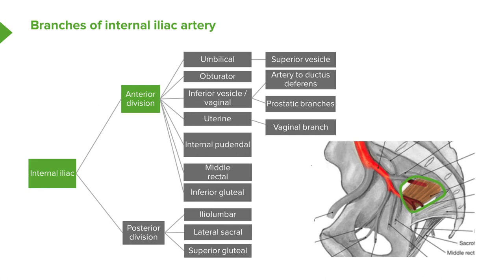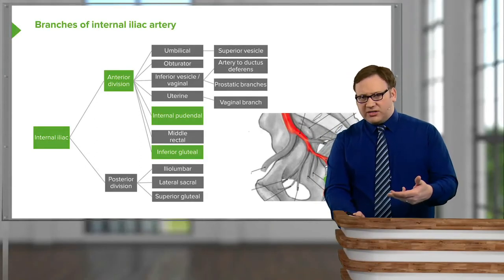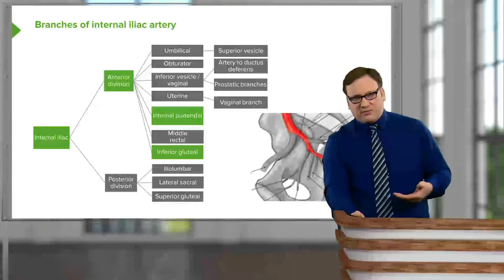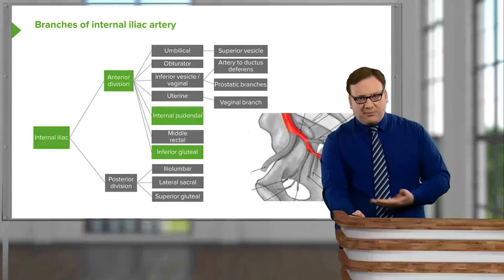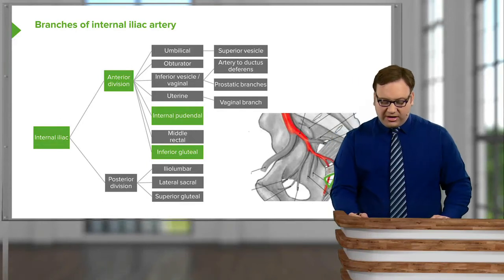We'll look at the perineum in more detail later. The inferior gluteal passes out to the gluteal region, while the internal pudendal hooks around the ischial spine — where we have the sacrospinous ligament connecting to the sacrum — and actually enters the perineum by passing through the lesser sciatic foramen. So the internal pudendal artery leaves the pelvis via the greater sciatic foramen and then enters the perineum through the lesser sciatic foramen.